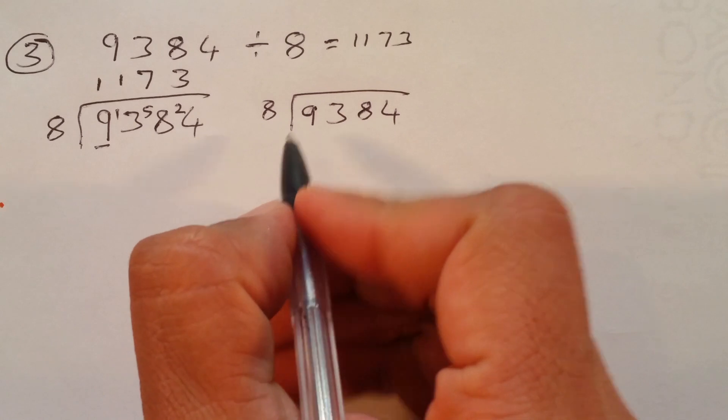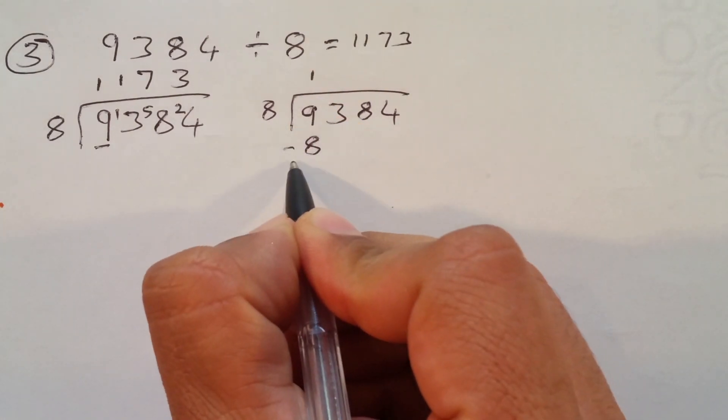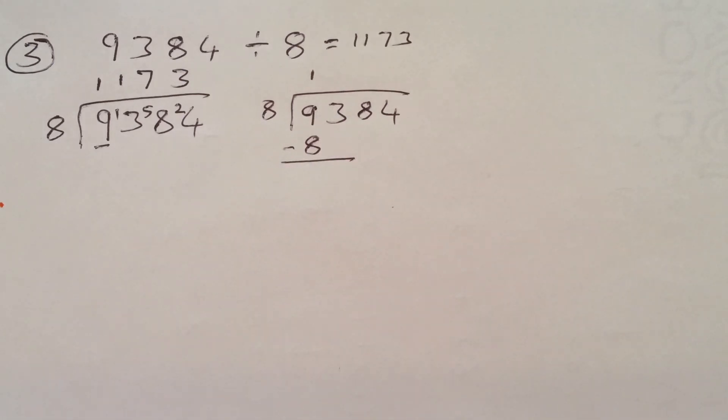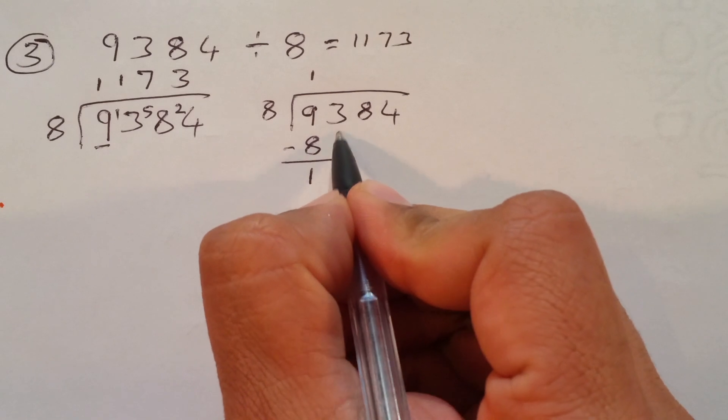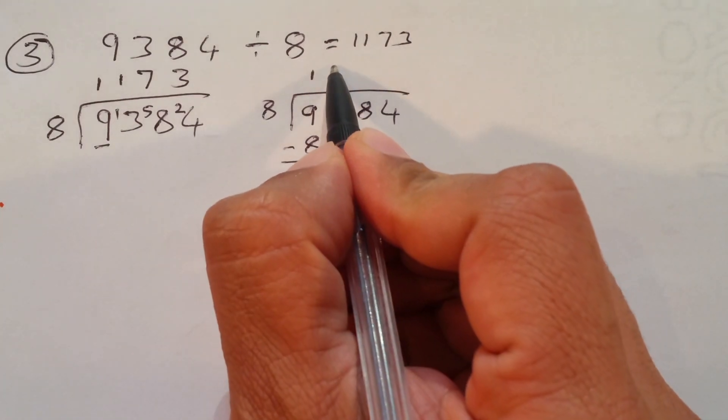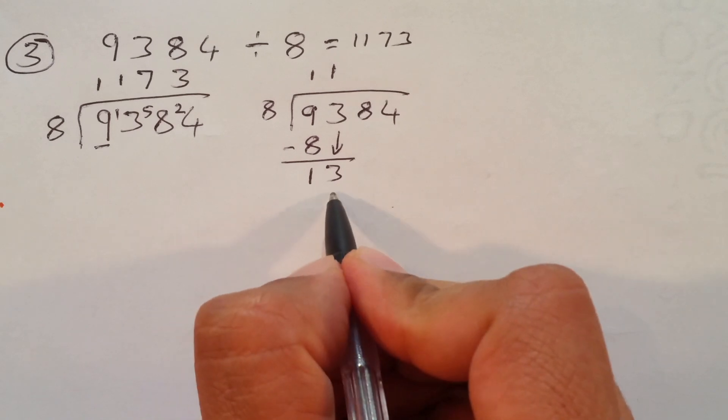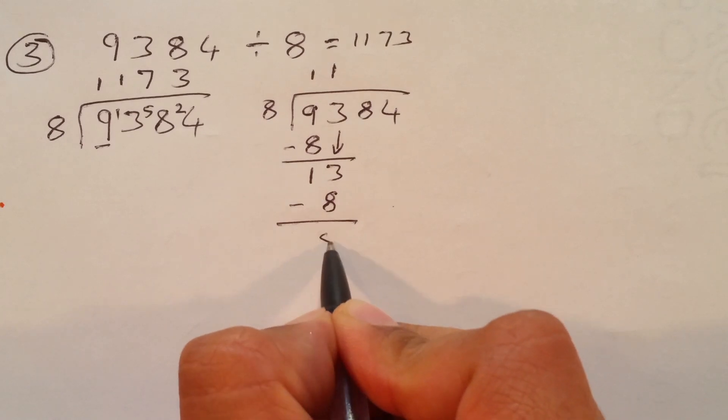Again, what we did, read 8 table till you get 1, which is 1, we write 8. Instead of mind calculation, we put it in the long division. So, 9 take away 8, which is 1. Bring 3 down, which is 13. Read 8 table. Again, 1. Write 8 times 1, 8. Take away, which is 5.